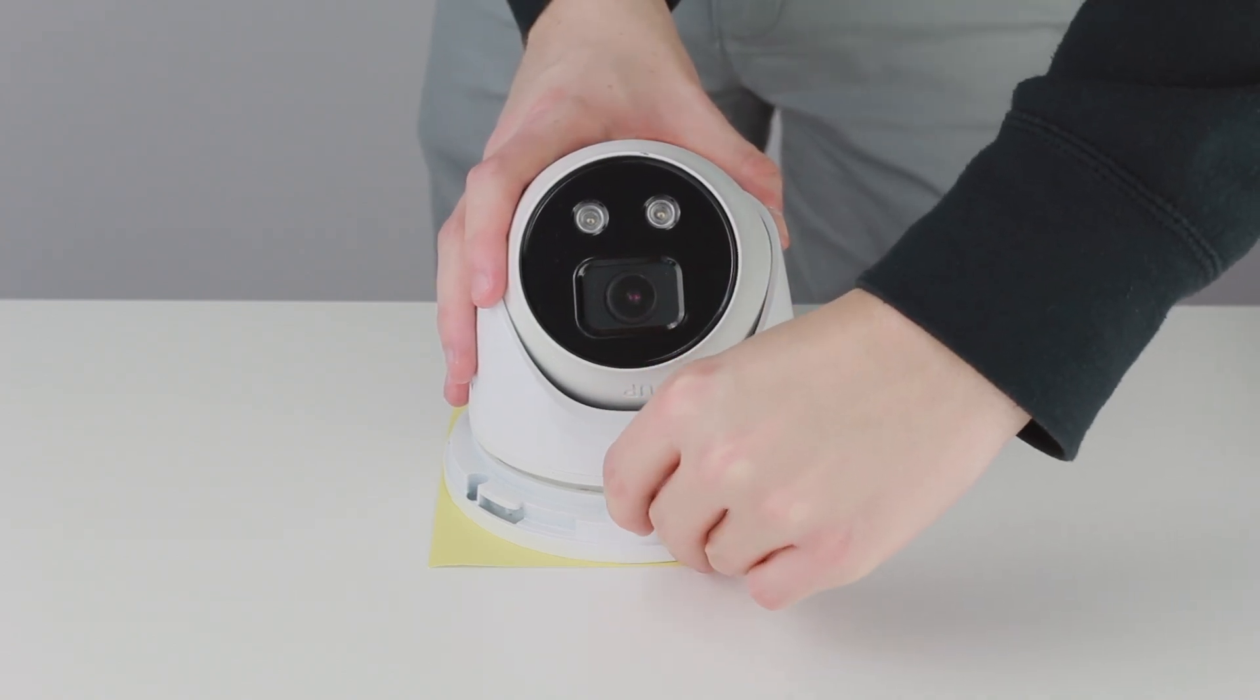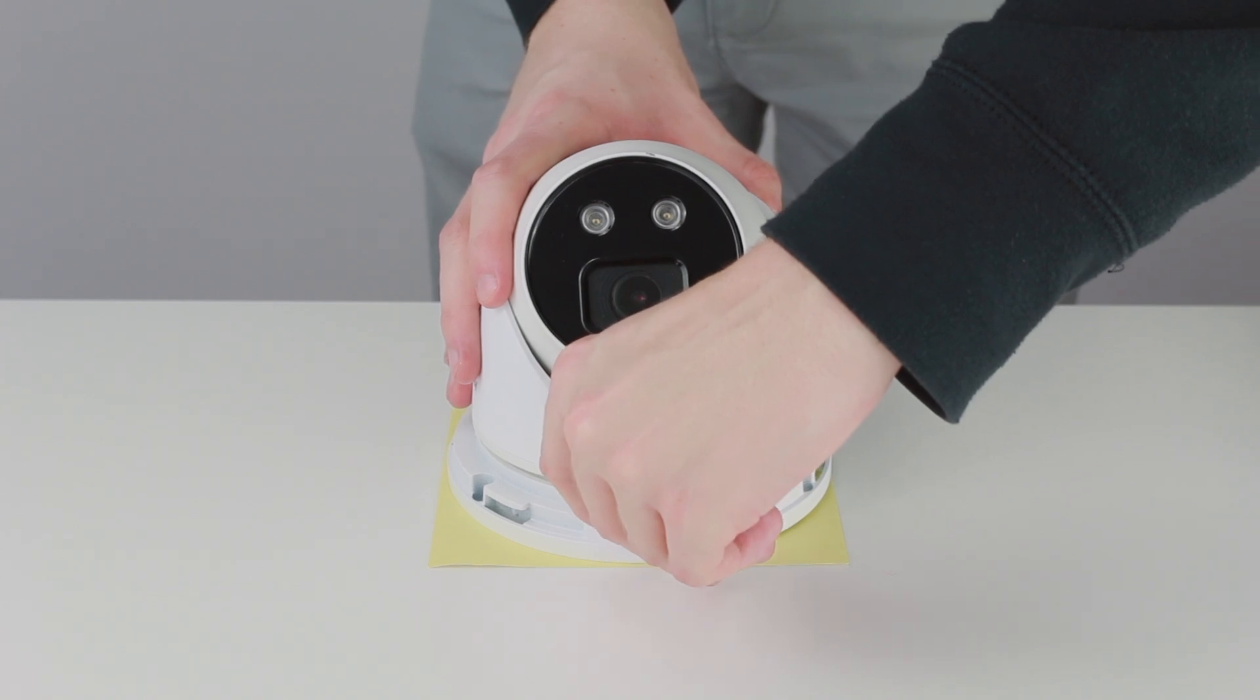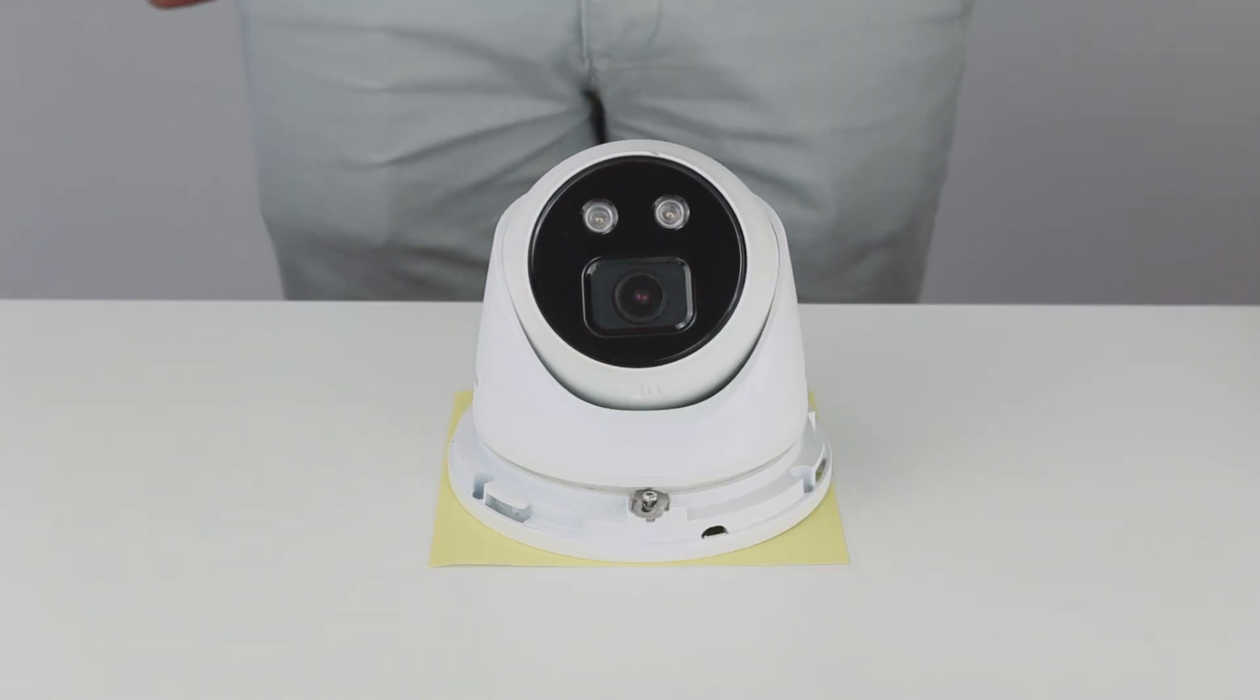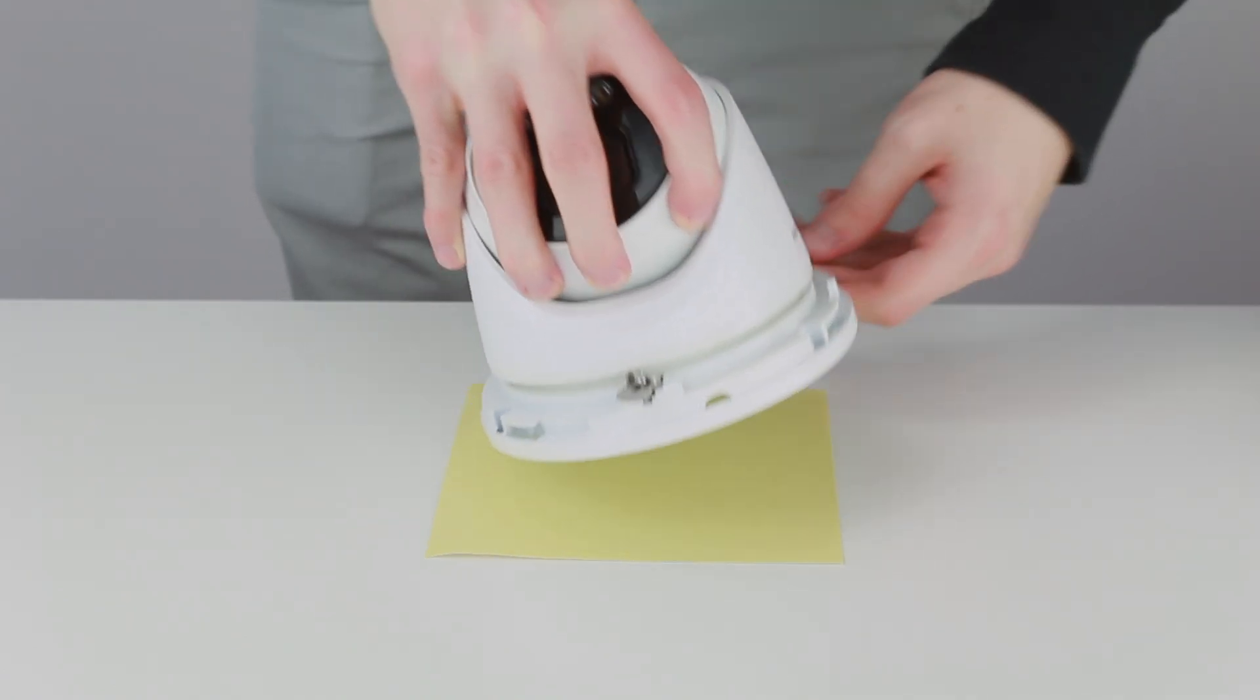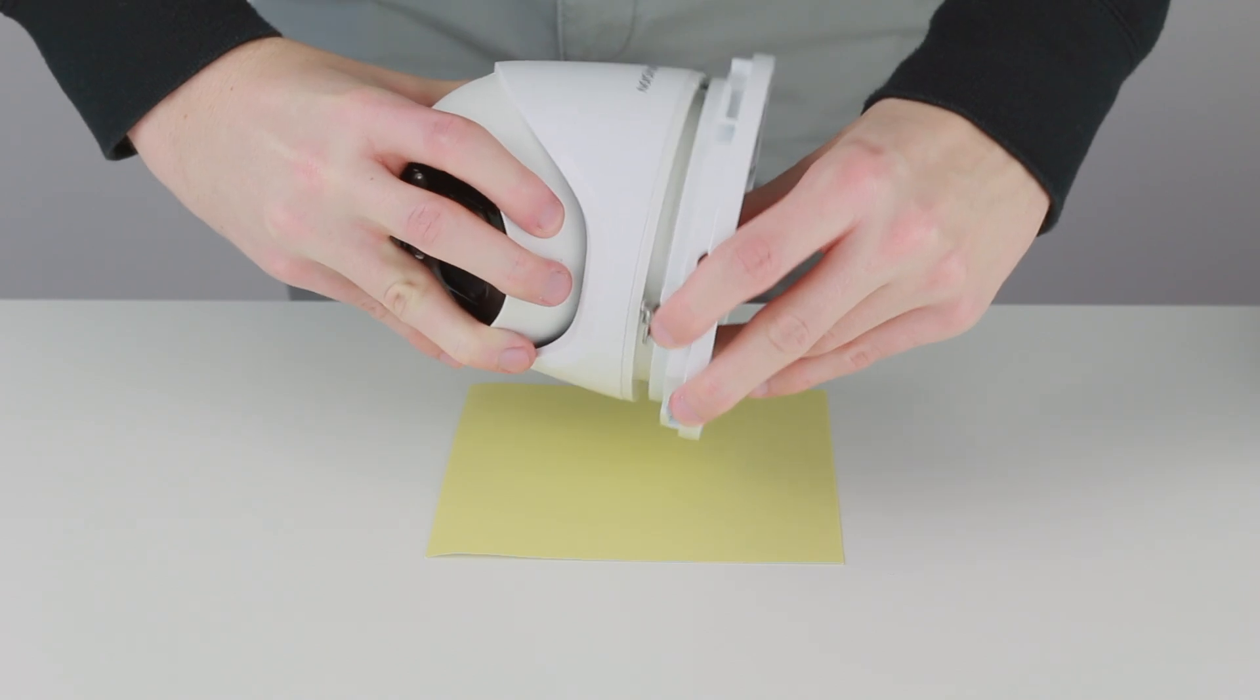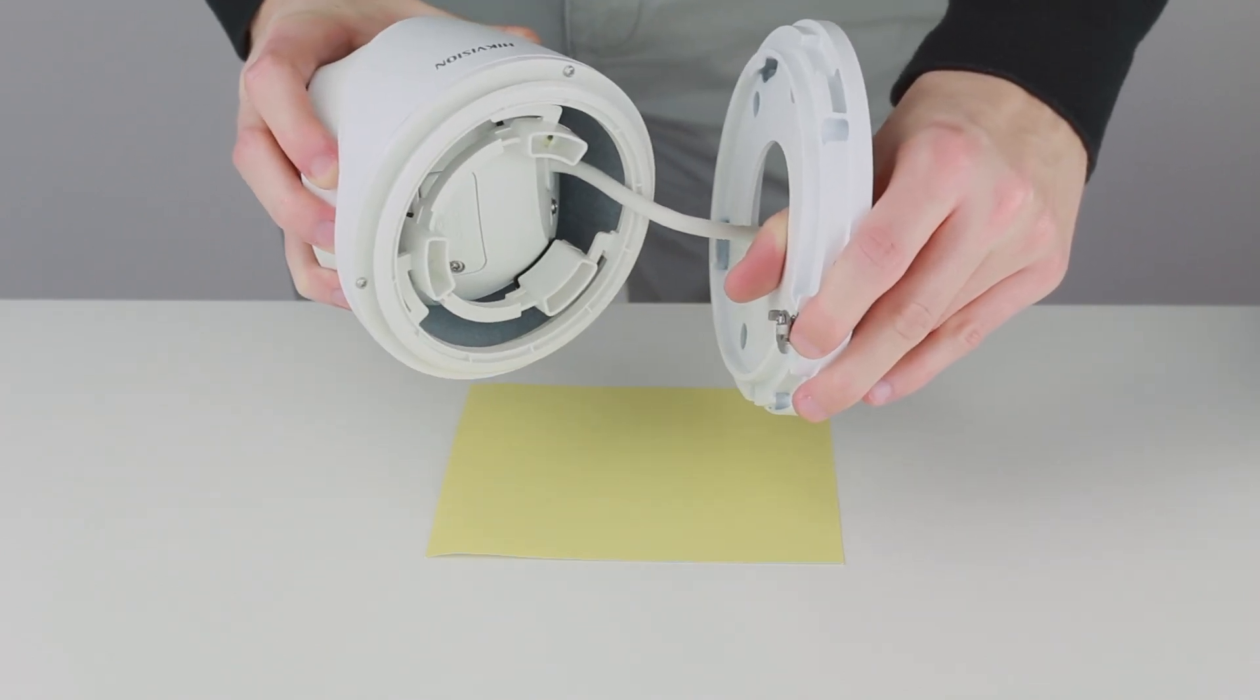Once fully loosened you should be able to move the small plate that holds the turret in place out of the way. With the plate held out of the way you should now be able to angle the ball and bracket of the turret out of the base plate. It is quite a tight fit and if it is a new camera it might take a bit of force to get it out of the base plate.